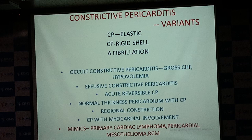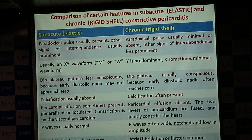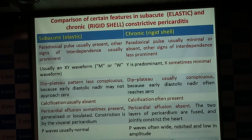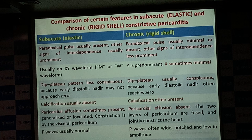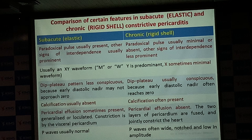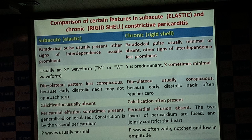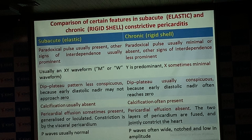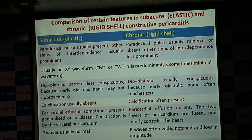Comparing elastic versus rigid shell constrictive pericarditis: paradoxical pulse is more often seen in rigid shell; JVP shows very prominent Y descent with rigid shell whereas X descent may not be dominant. Calcification is usually absent in elastic constriction but often present in rigid shell. Pericardial effusion is sometimes present with elastic constriction but always absent in very chronic rigid shell.